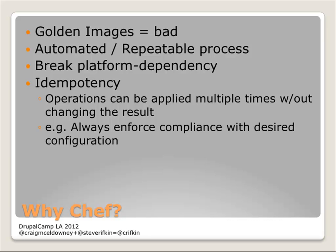The idea is to take a step back and give yourself an automated and repeatable process so that as a server spins up it's pulling in the latest versions of everything you need. You can break your platform dependency on both the server OS side and the cloud service provider side — separating your configuration logic from whatever provider you're working with. Whether you're on Amazon or Rackspace, you're not reinventing the wheel. Pull the smart stuff away from specific cloud providers and make yourself more independent from them.